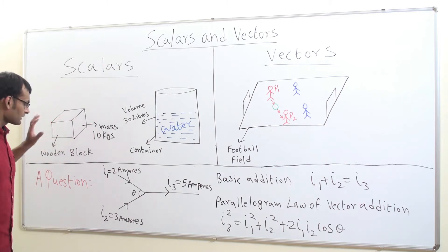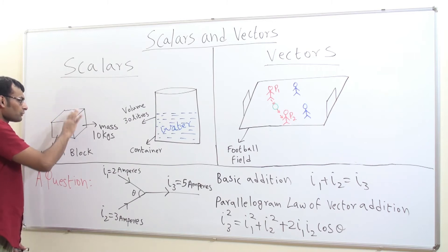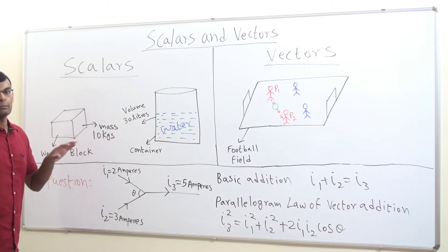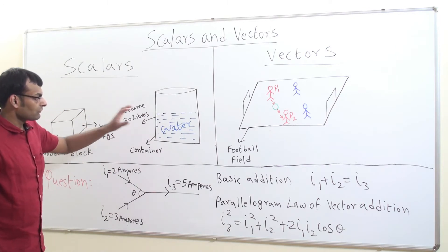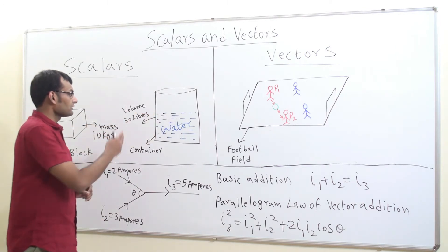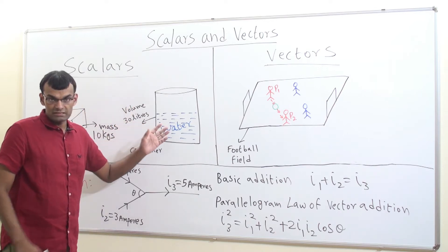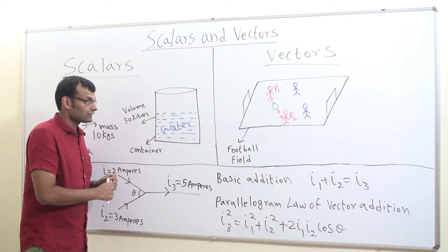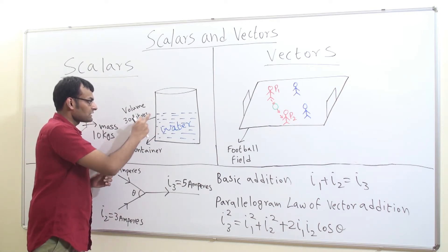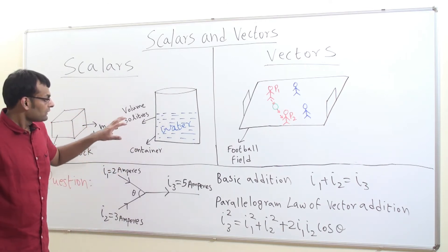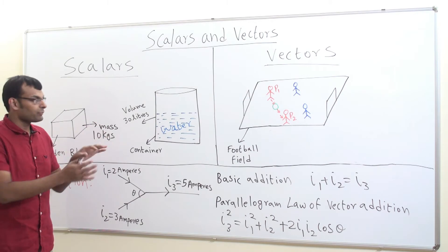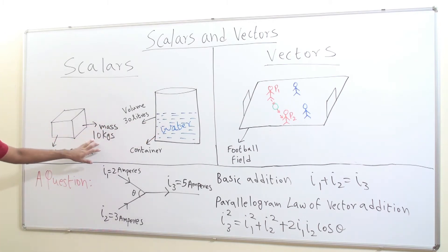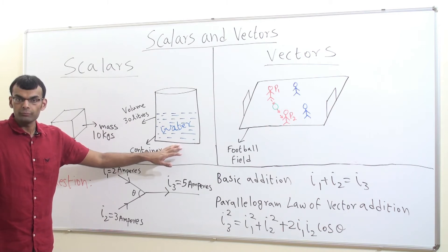This block is described entirely with 10 kg, indicating only magnitude. Similarly, let's take a container having water in it. The water indicates a volume of 30 liters present inside. The water is described with 30 liters — again, only a magnitude with no directional component. So 10 kg describes the mass and 30 liters describes the volume of the water in the container.